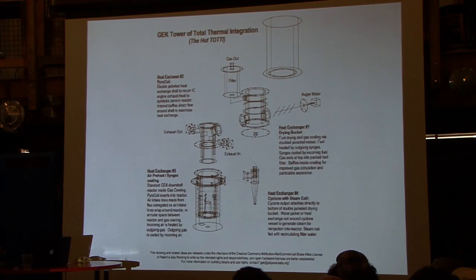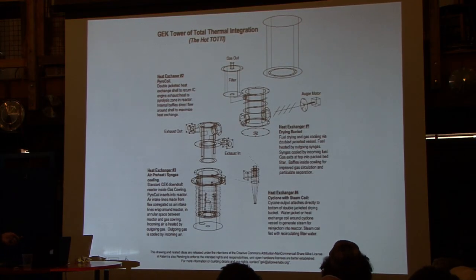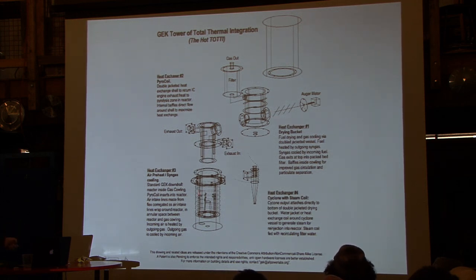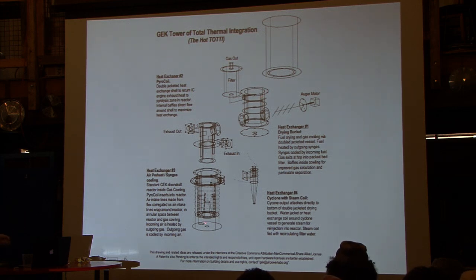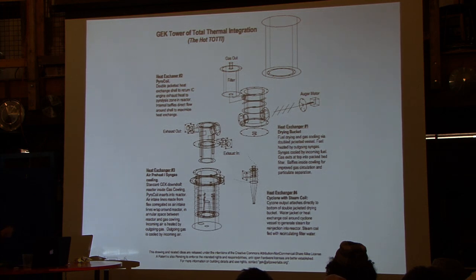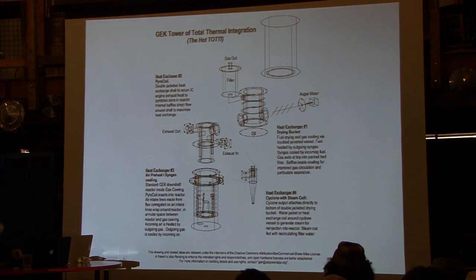This is how it was built back in the day — done quite differently now — but we had the standard reactor, the pyrocoil unit with exhaust in and out from the engine, the drying bucket attaching to the hopper, the reactor going down into a gas cowling, and all of those coming together on a skid.